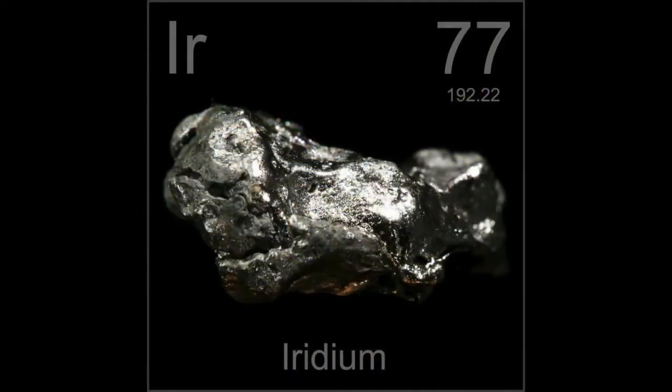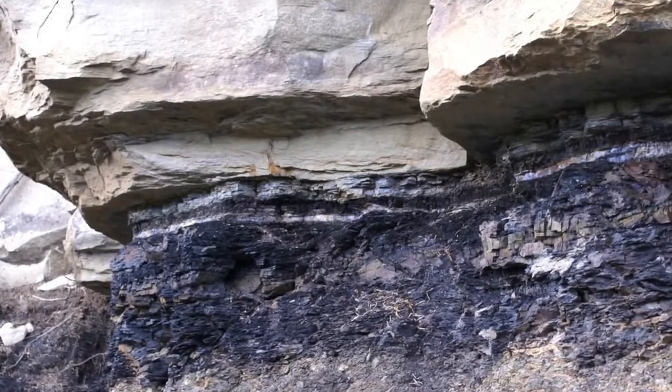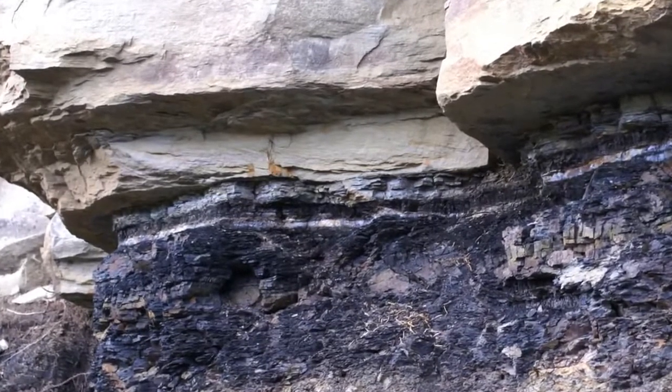This layer also contains a large amount of the extremely rare and prohibitive iridium. So how did the earth get a substantial layer of it worldwide that far beneath the surface?